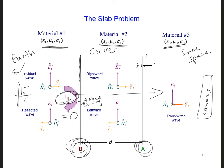In this case, material number three is equivalent to the load of the transmission line. We know its impedance, say eta three, as long as we know the material parameters for material number three.